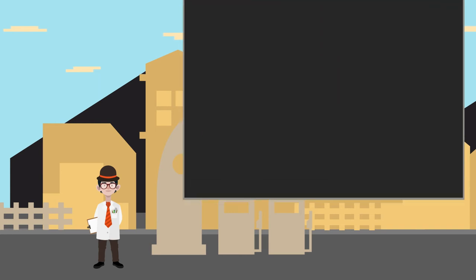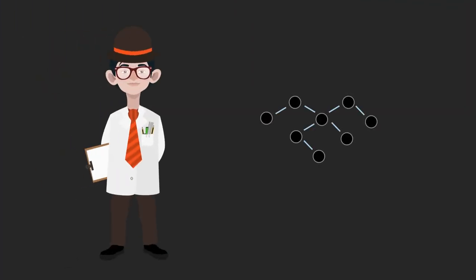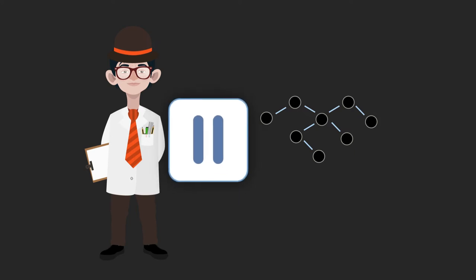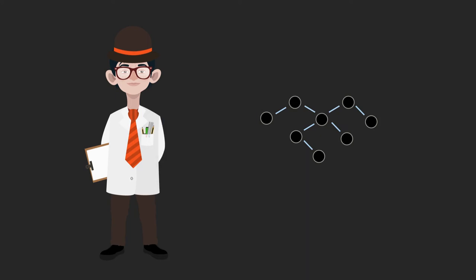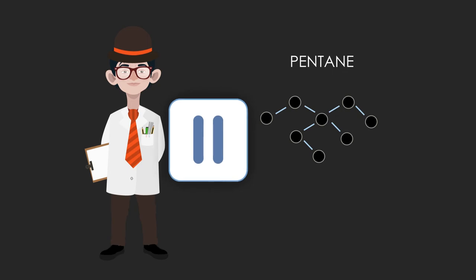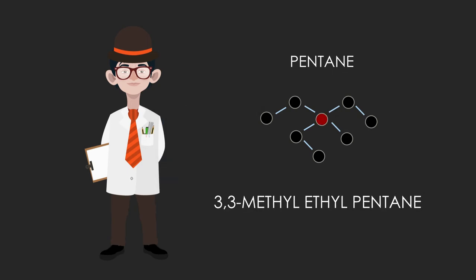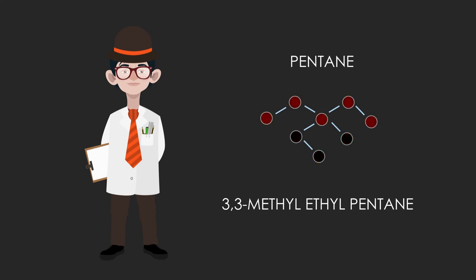If an isomer of octane was used, the petrol burnt more smoothly. Look carefully — there are eight carbon atoms, so it is a structural isomer of octane. Pause and count the atoms in the longest chain. Whichever way you count, the longest chain is five carbon atoms long, so the name will be pentane. Off the third atom in the chain there is an ethyl group and also a methyl group, so its name is 3-methyl-3-ethylpentane.